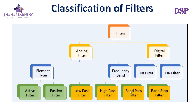A band pass filter allows signals falling within a certain frequency band and blocks the lower and higher frequencies. A band stop filter blocks the signals falling within a certain band and allows both the low frequencies and high frequencies. That covers the analog filter types.